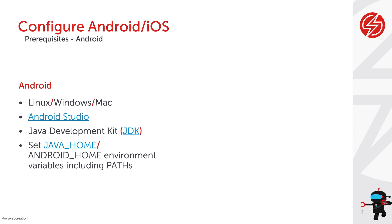What we then need to do is set some environment variables. We need to set Java Home, Android Home, and also set extra variables and include them in our path. We will cover that for Windows, Mac, and Linux on how to do that.